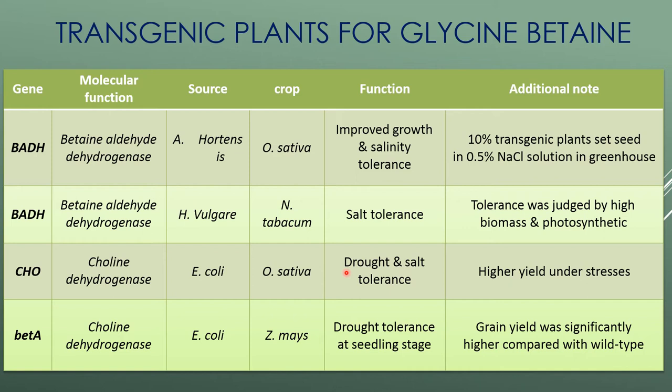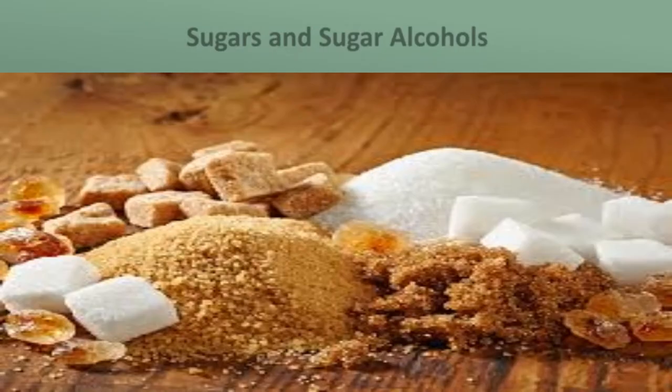Transgenic plants for glycine betaine include Oryza sativa, which showed tolerance to drought and salt and higher yield under stress conditions. In Zea mays, drought tolerance at seedling stage was seen in the transformants, and grain yield was significantly higher compared to that of wild type.